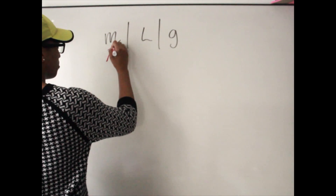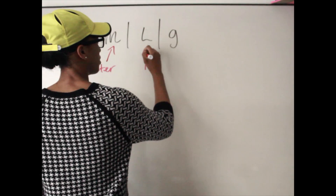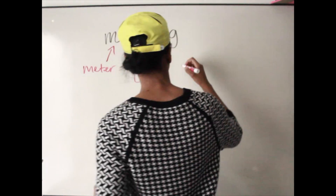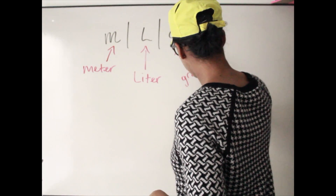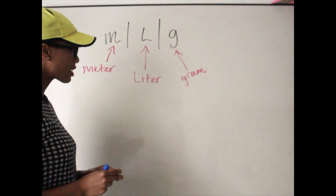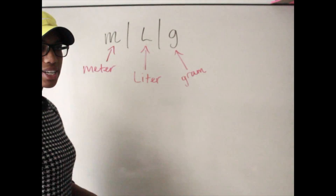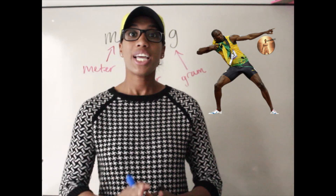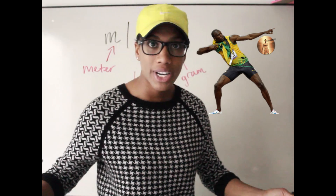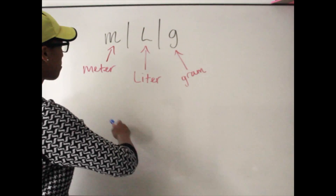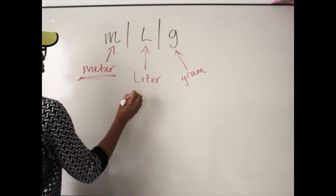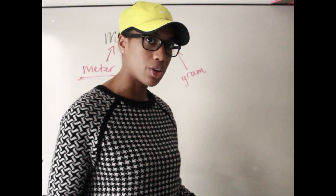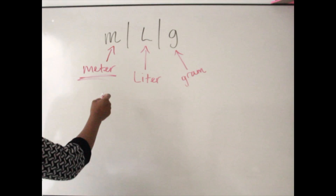The M stands for meter, the L is liter, and then we have gram. Meter represents distance. If we're talking about the Olympics and you have runners lined up on the line — the gun goes off and they're running track — what they're running is distance in meters. It may be a 100-meter dash, which is fairly short. Miles can be converted into meters, and we're also talking about centimeters and millimeters.